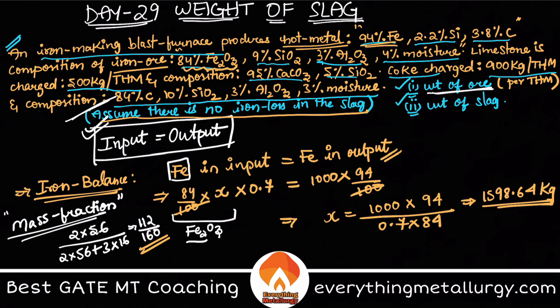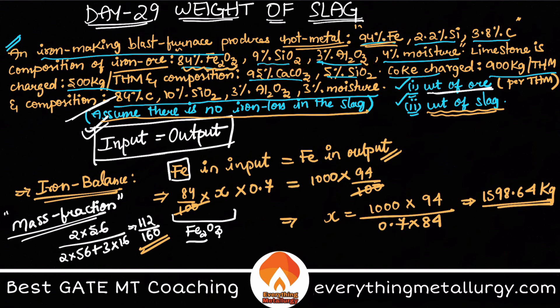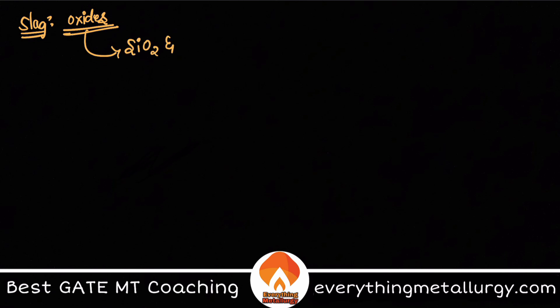Now for the second question: the weight of slag. Slag is the collection of all the oxides present. We are only interested in oxides here. Looking at the question, we have SiO2 and Al2O3 as oxides — Fe2O3 is excluded since there is no iron loss into the slag. So we have two oxides: SiO2 and Al2O3.